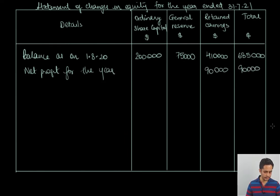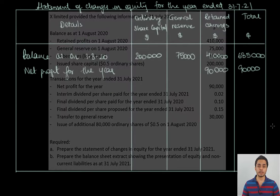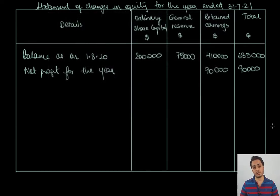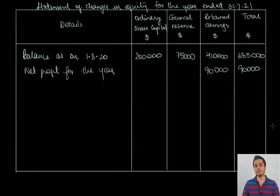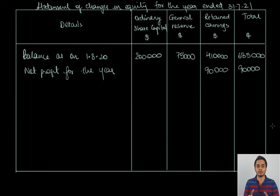Then we have the interim dividend paid per share of $0.02. This is per share, so the dividend per share will have to be multiplied by the number of shares. If the rate of dividend was given as a percentage, you would multiply it by the value of the share capital. If you do not understand this concept, I would suggest you watch my video where I have covered the concepts of companies in detail.